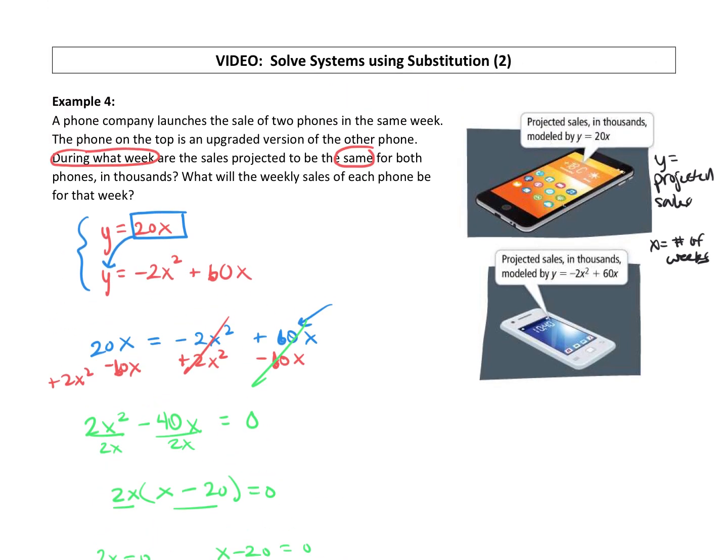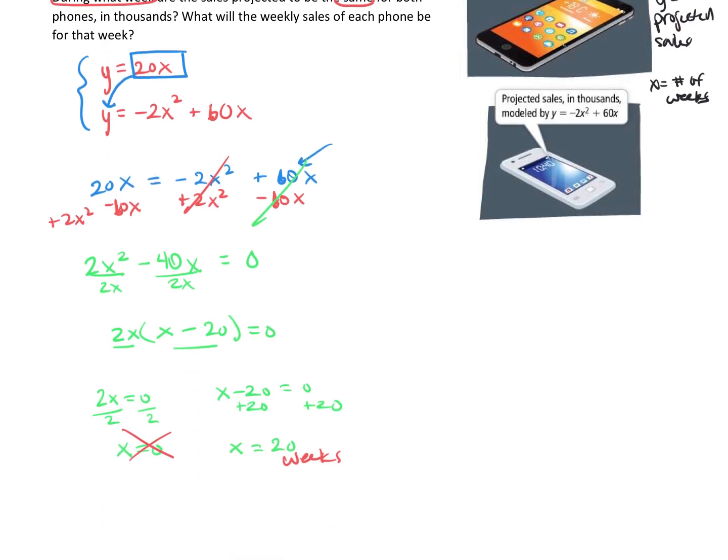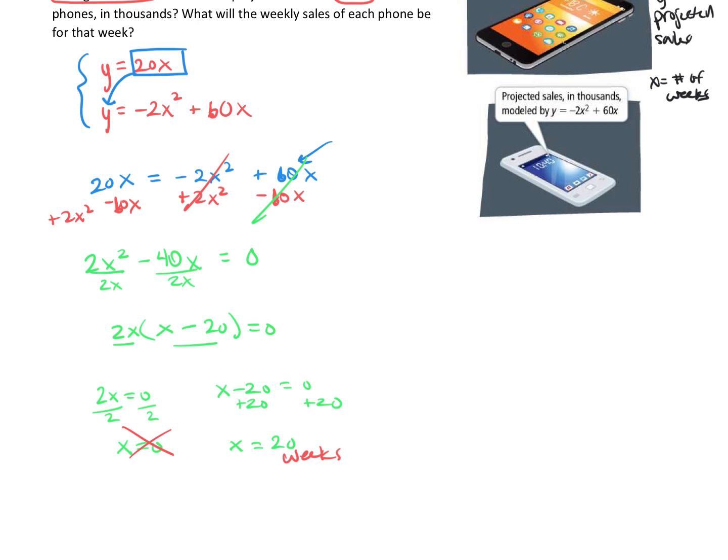So they did ask us more than just that. What will the weekly sales of each phone be for that week? That's the projected sales. So we want to know the y value. Well, we know the x. We're just going to plug that back in to get the y. You can choose either equation. I am going to choose the y equals 20x equation. The projected sales y are equal to 20 times our 20 weeks. We're plugging in a 20 for x. 20 times 20 is 400. So y is 400.